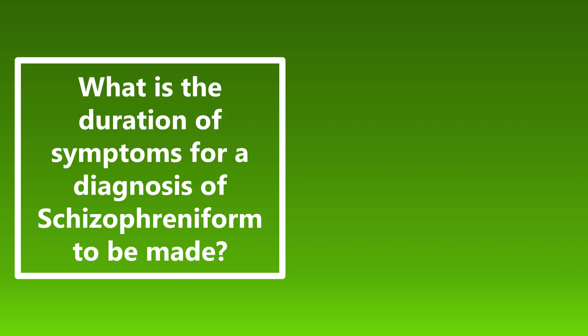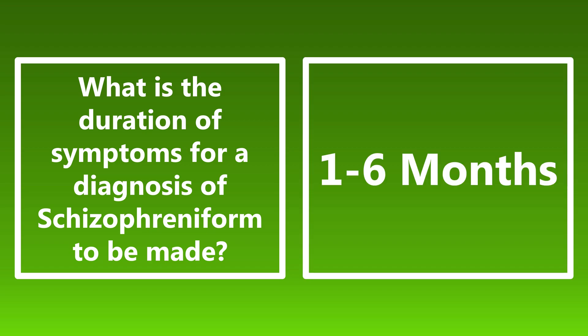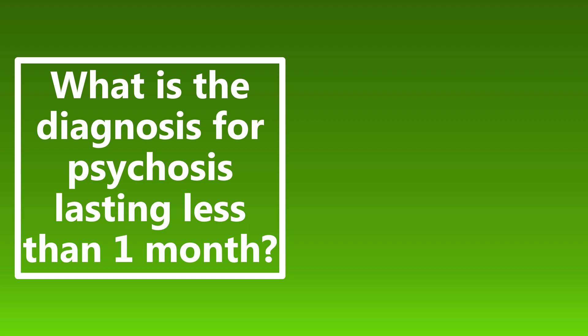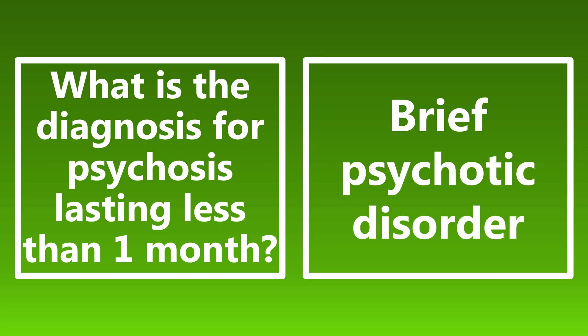What is the duration of symptoms for a diagnosis of schizophreniform to be made? Be sure you know these distinctions between psychiatric disorders. Schizophreniform disorder is one to six months of symptoms. Greater than six months is when we start calling it schizophrenia. And if it's less than one month, the diagnosis is brief psychotic disorder. So: less than one month is brief psychotic disorder; one to six months is schizophreniform disorder; and greater than six months is schizophrenia.